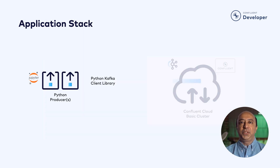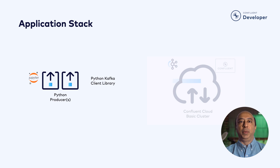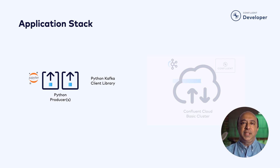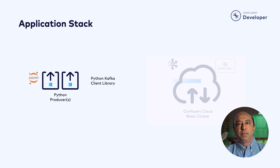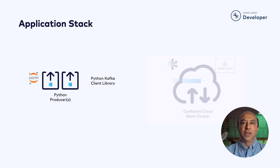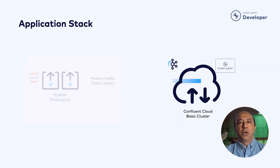Our technology stack today consists of Python code running in a Jupyter notebook. We will be using the Confluent Kafka Python client library, which is built on the ever-popular LibRDKafka C library, just like the .NET and Go libraries. For our infrastructure platform, we will be using Confluent Cloud.